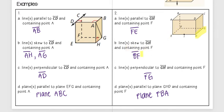For a line skew to GH and containing point F, I only have three options of lines that contain point F, and I see that FG and FE are both on the same plane as GH. And so that really only leaves FB, and that's the only one that doesn't intersect GH but it's also not parallel to it.